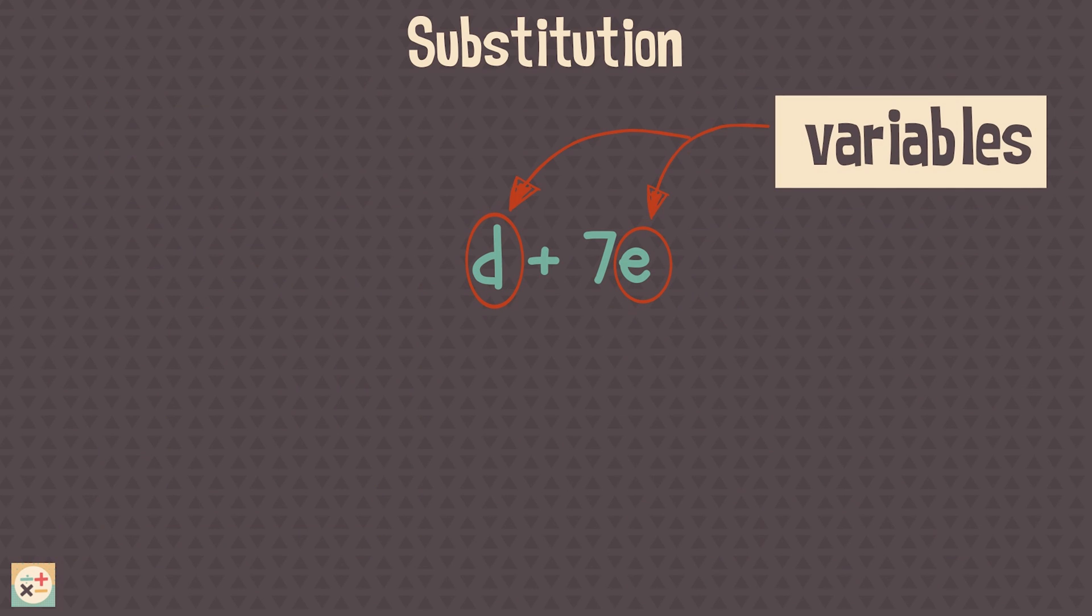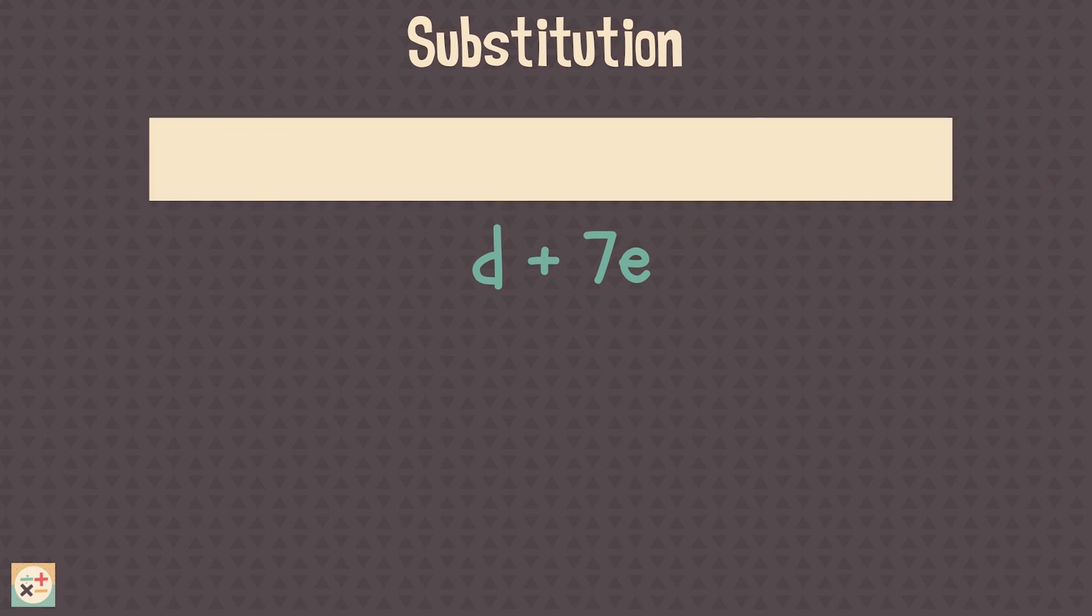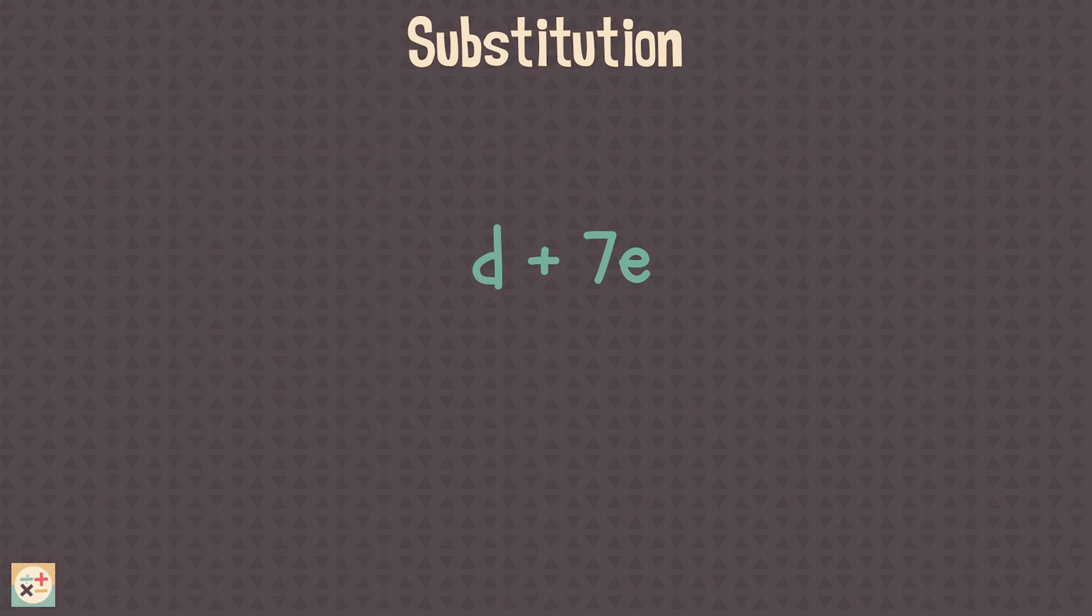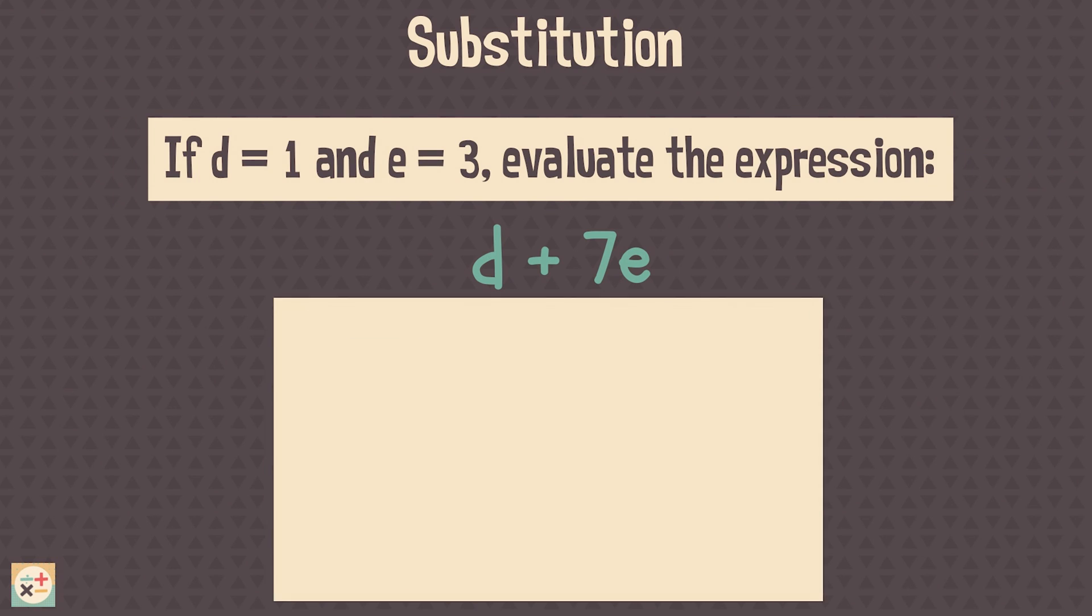Here is a slightly more complex example involving two variables, D and E. The question tells us that D equals 1 and E equals 3. We can now substitute these into the expression to calculate the answer.